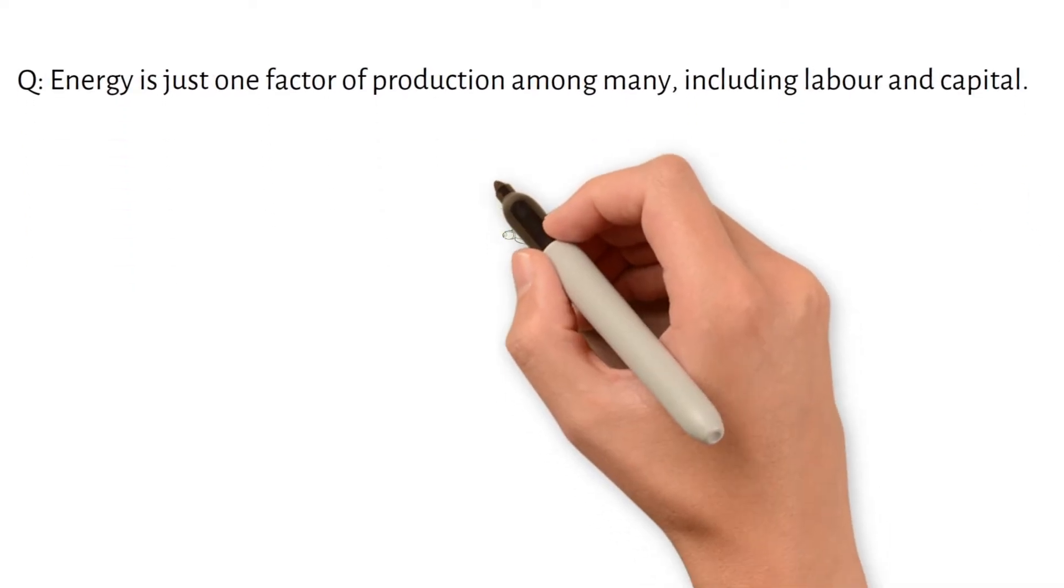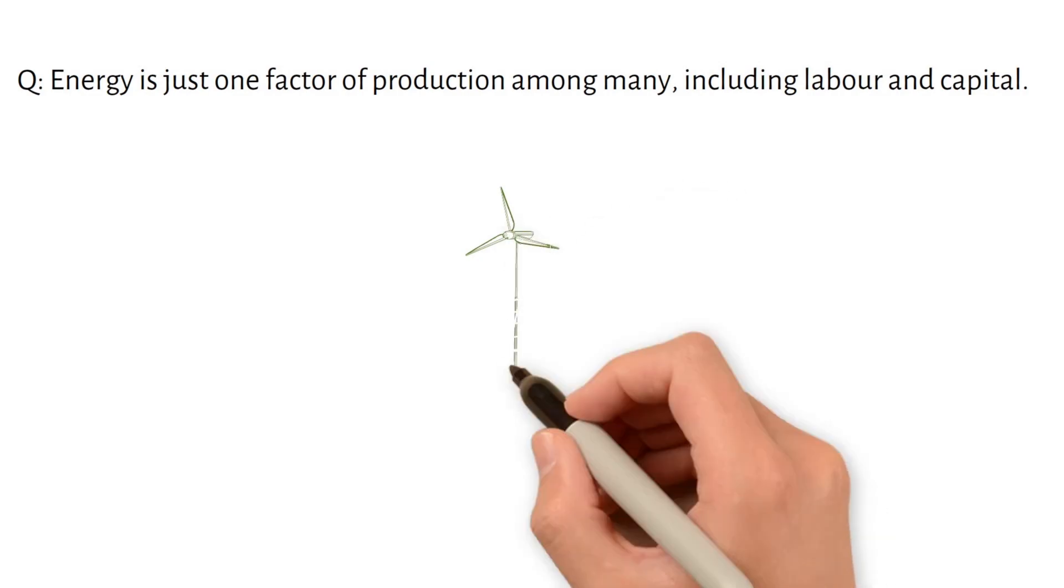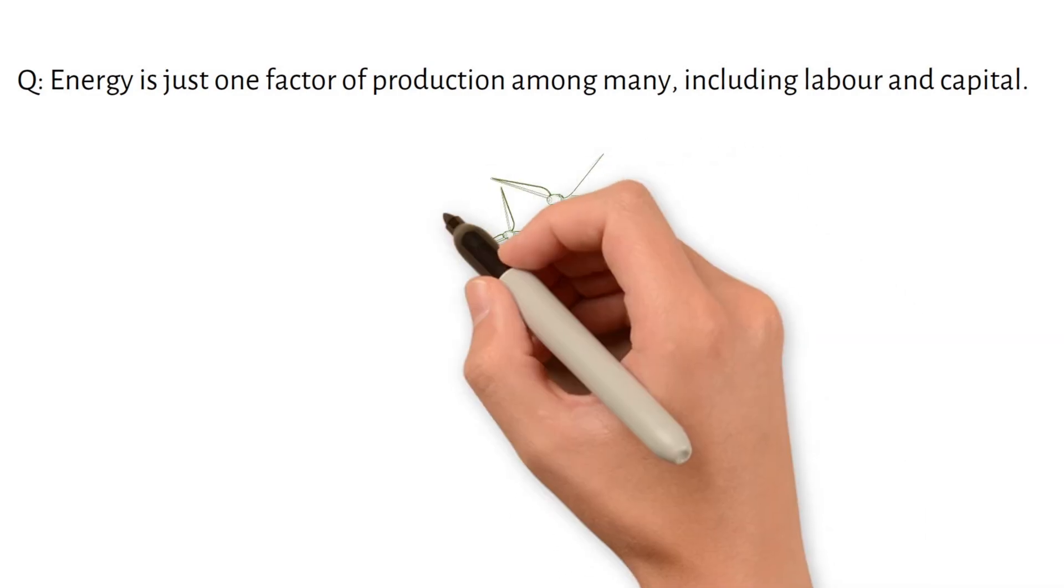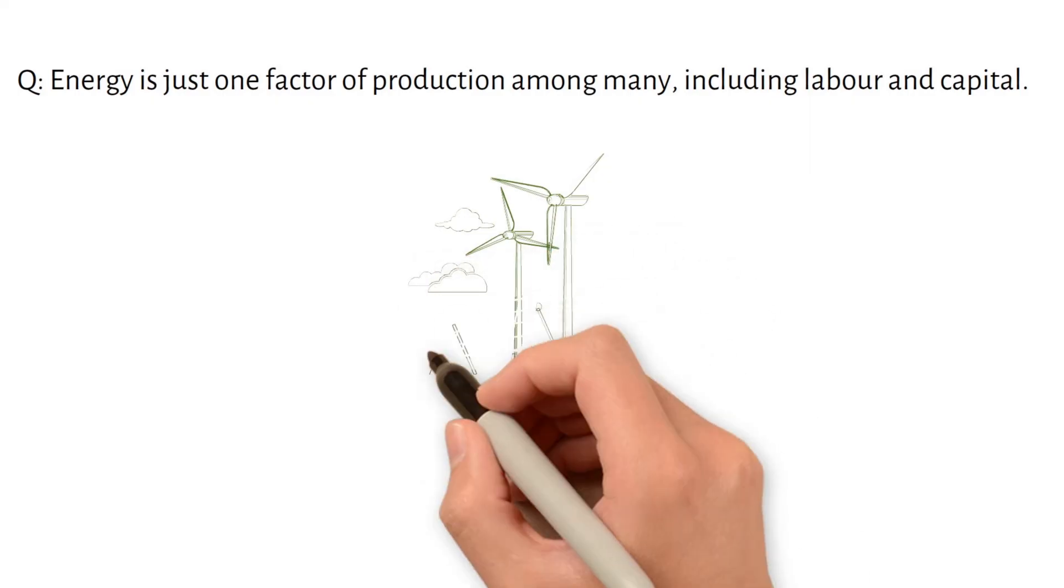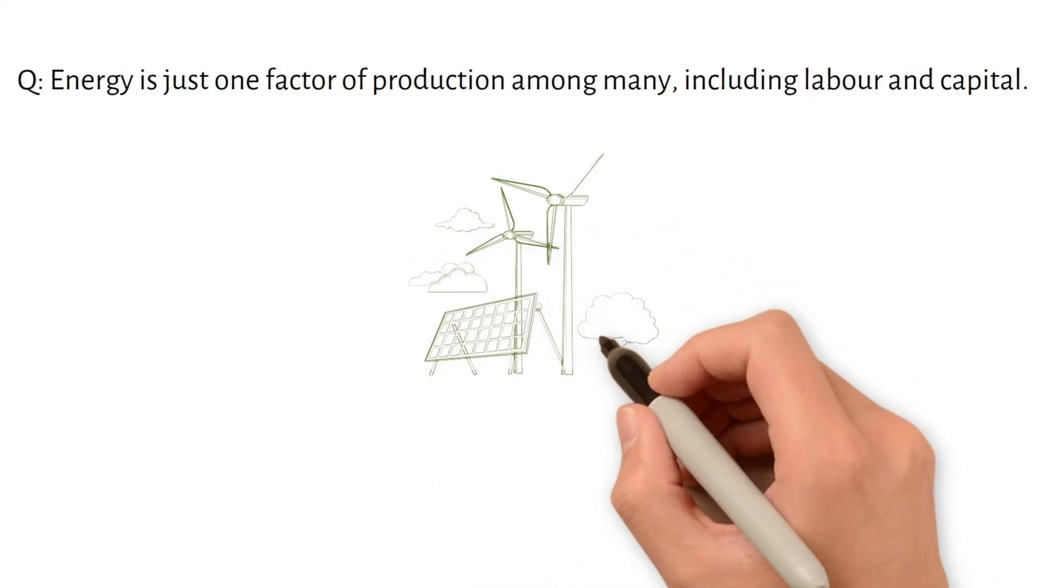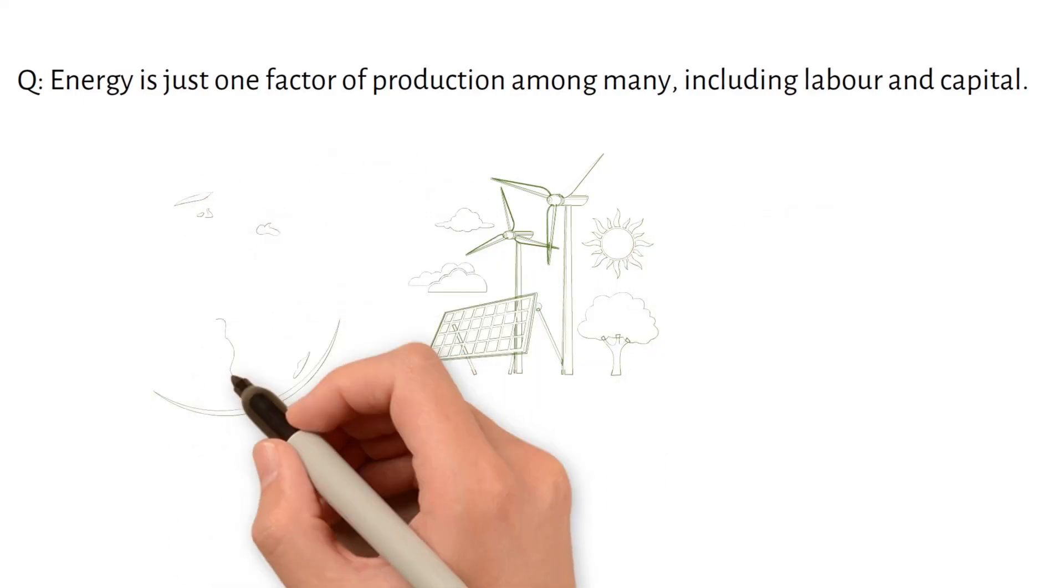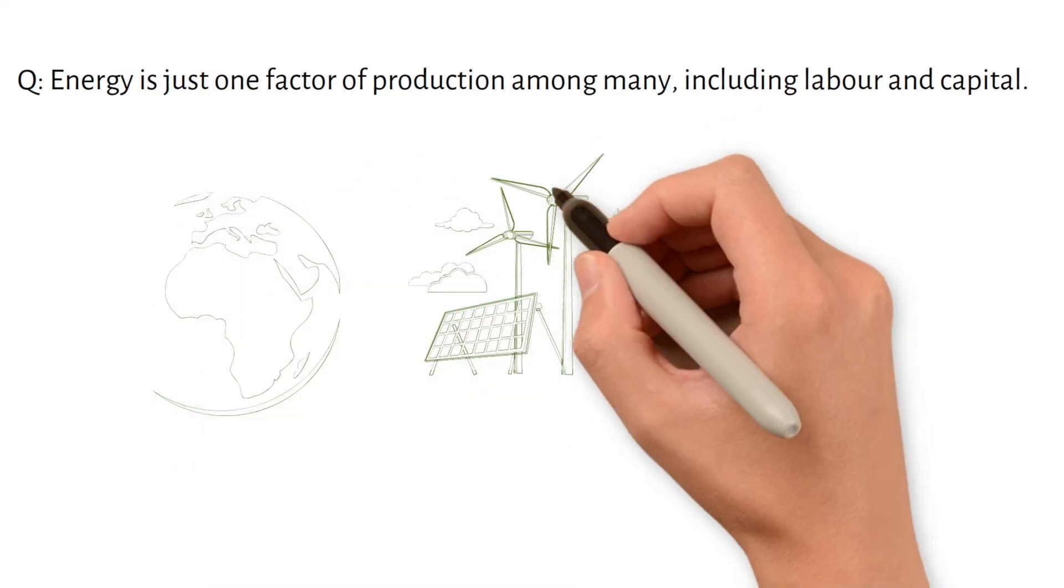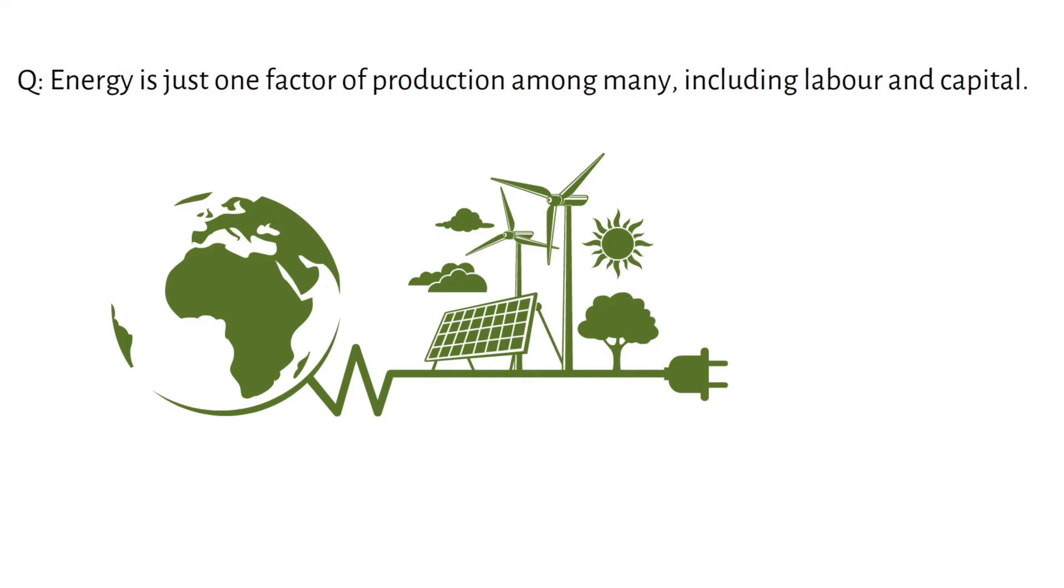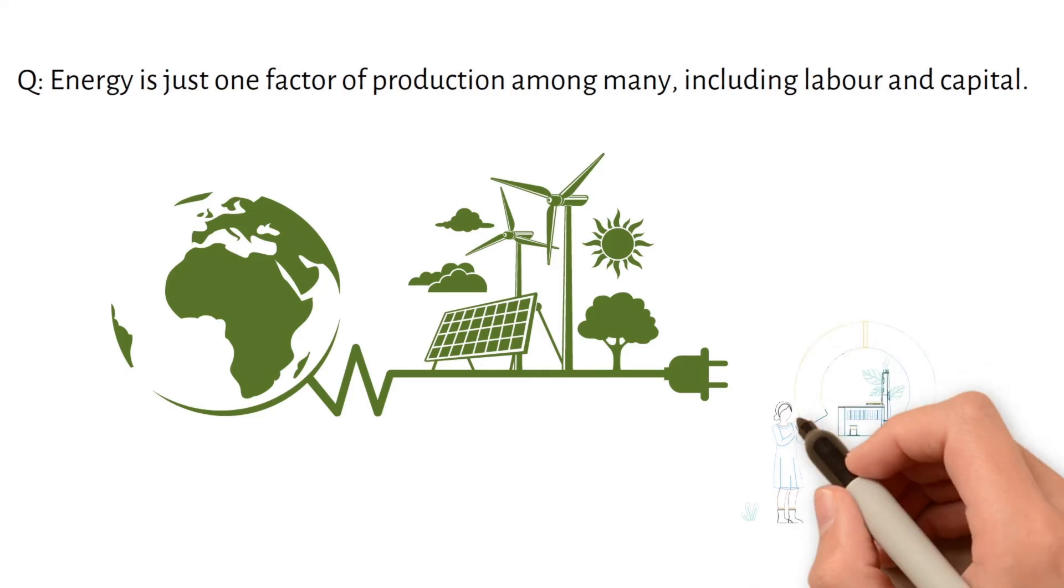Energy is just one factor of production among many, including labor and capital. This argument neglects the fundamental role of potential energy dissipation in all universal processes. Energy isn't just one factor among many. It's the driving force behind all actions. People can't sustain themselves or engage in labor without it. Physical capital loses its significance without energy to facilitate the flow of resources like people, raw materials and information.